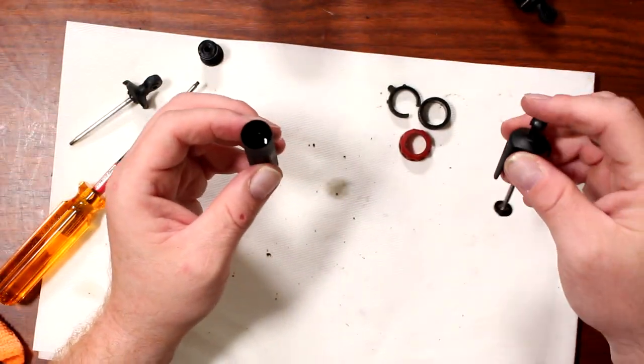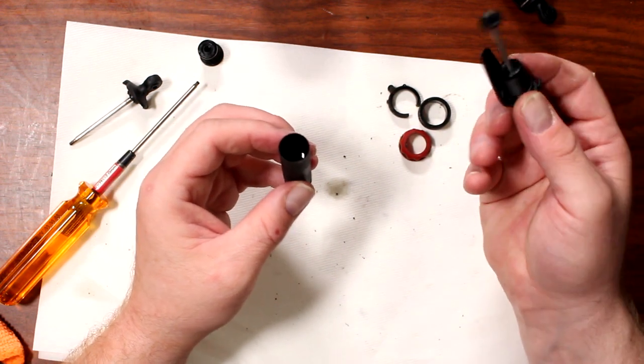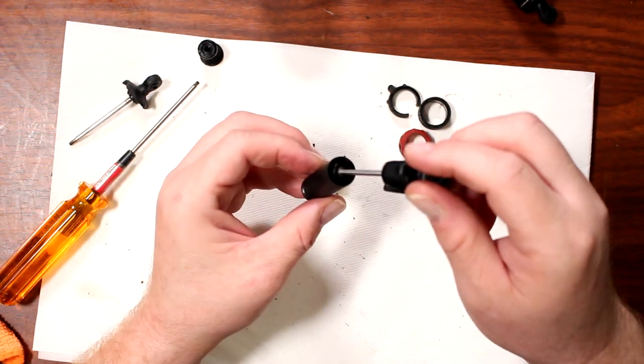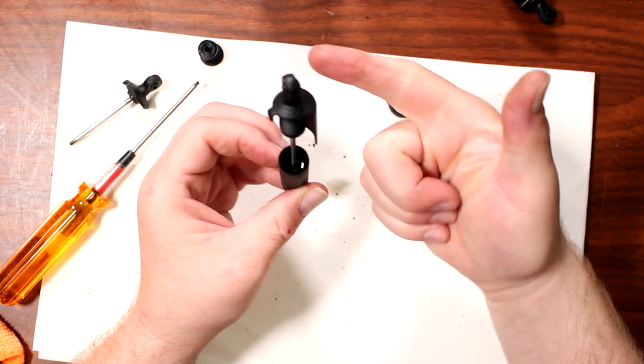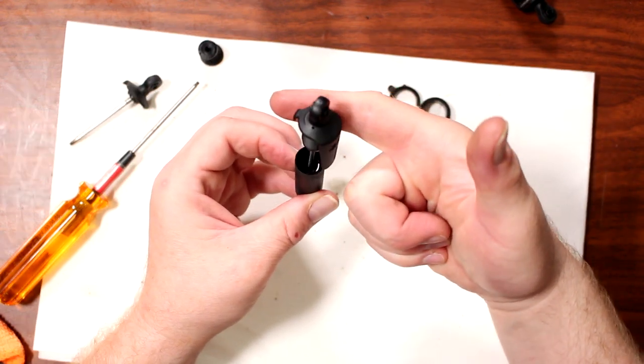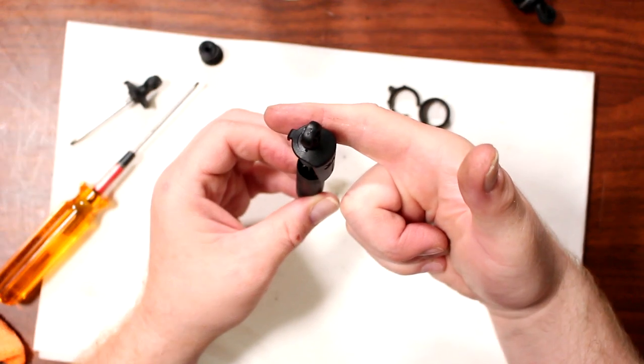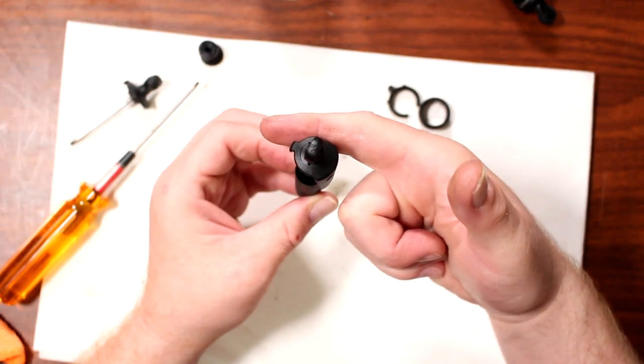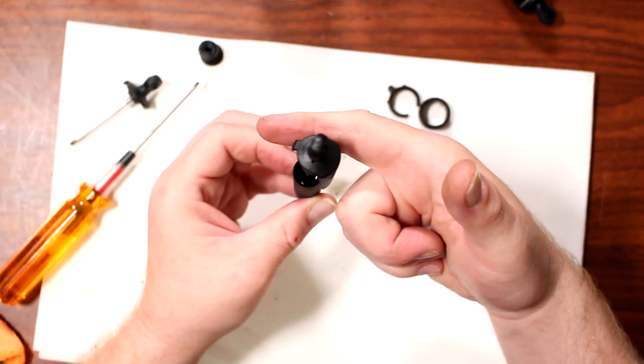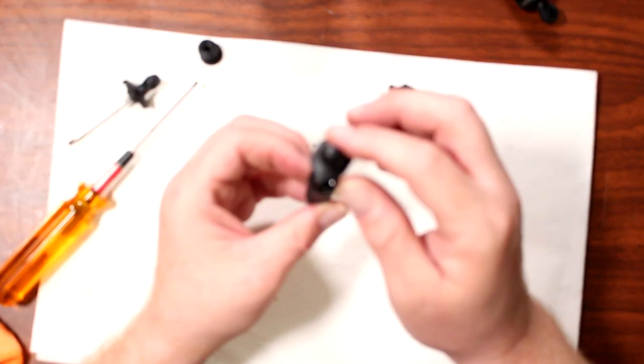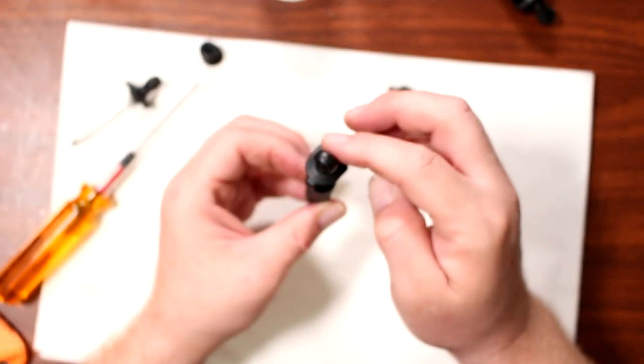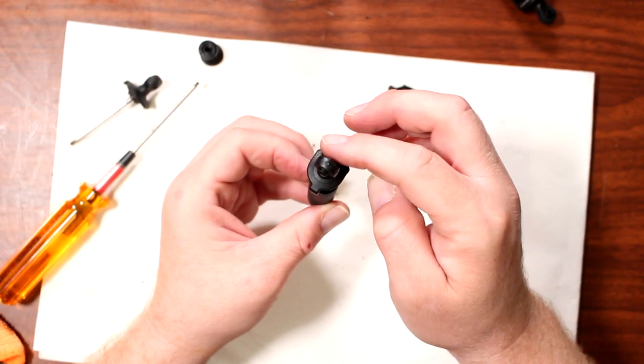And now what you're going to do is take your shock. What I do is just let it like this and slowly lift it and let gravity bring it down. What's happening right now is the oil is going through the piston. And the reason I want to do it slowly is to make sure I don't create any air bubbles.